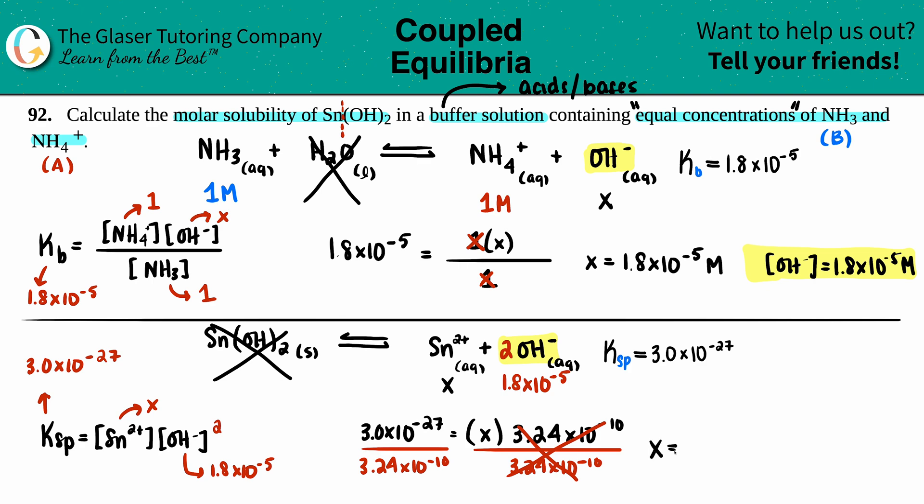3 times 10 to the negative 27th divided by 3.24 times 10 to the negative tenth. We'll do two sig figs: 9.3 times 10 to the negative 18th, and that's molarity.